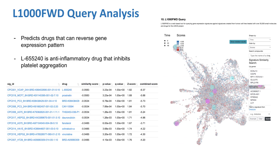The last slide shows that the Jupyter notebook's analytical tools, specifically L1000FWD, can predict drugs and small molecules that can potentially reverse the gene expression pattern of the input data, which in this example is the gene expression pattern in young versus old brain tissue. These are the top 10 drugs predicted to maximally reverse the aging signature. The first one, L655240, is an anti-inflammatory drug that inhibits platelet aggregation, preventing clot formation in blood vessels. These clots are dangerous because they can block circulation and lead to heart attack or stroke, which are more common in the elderly.